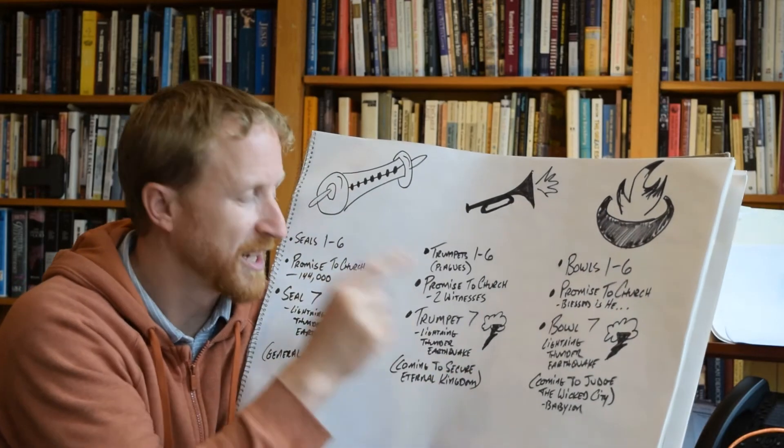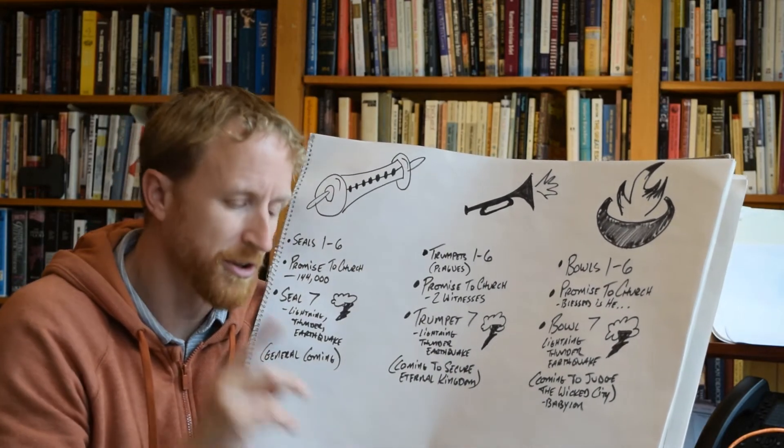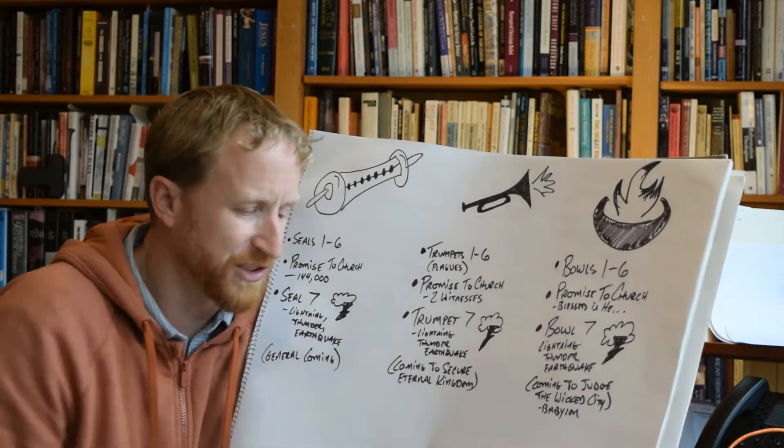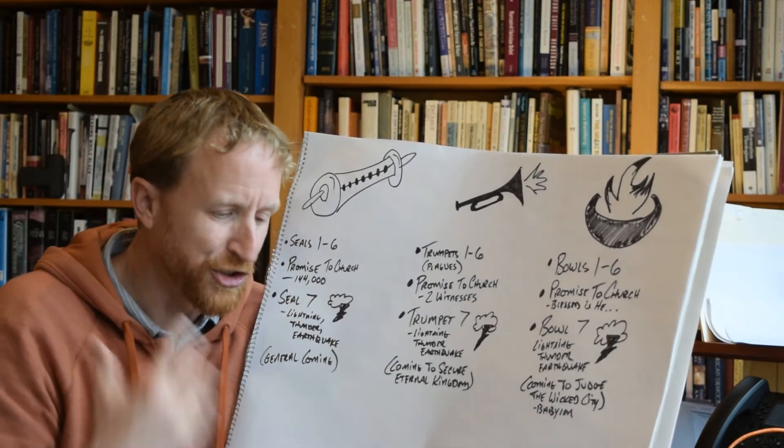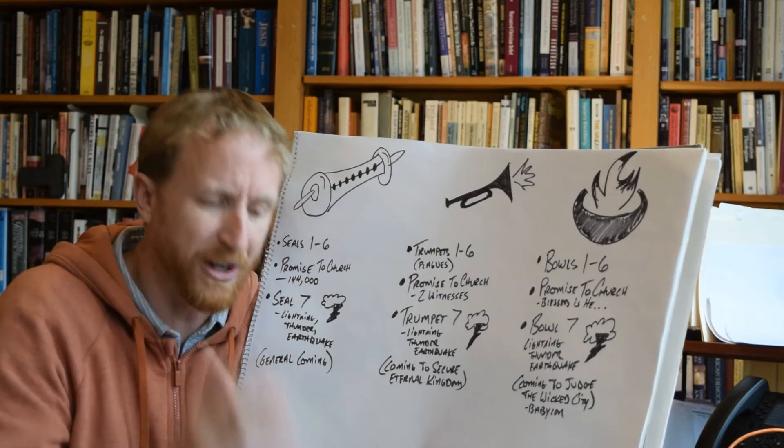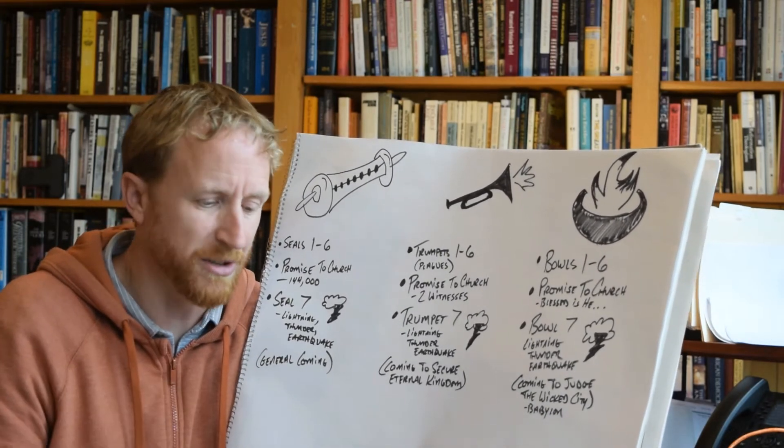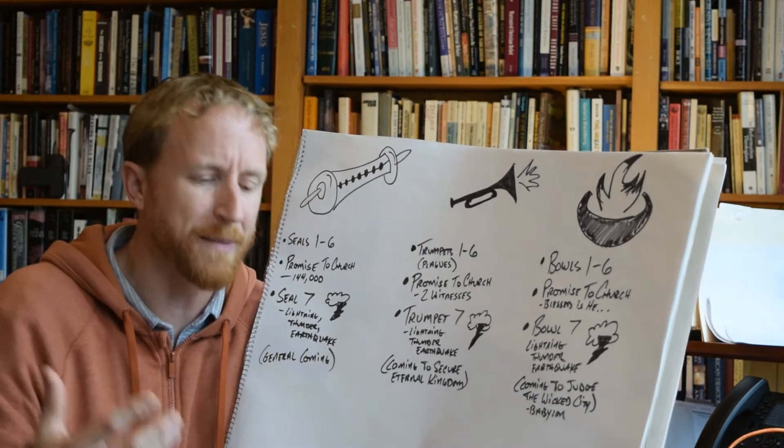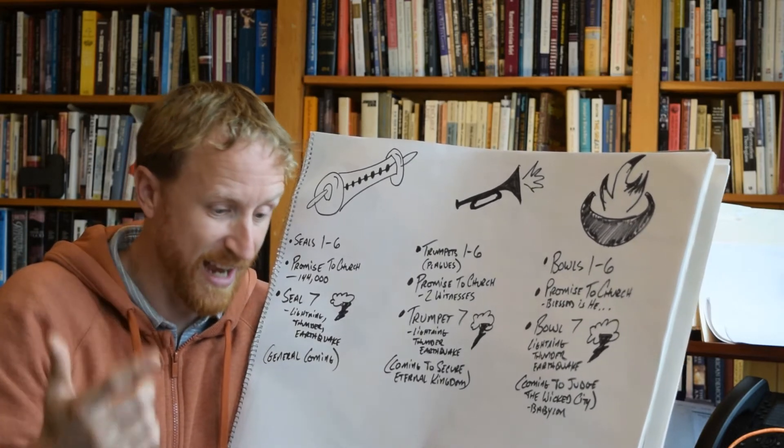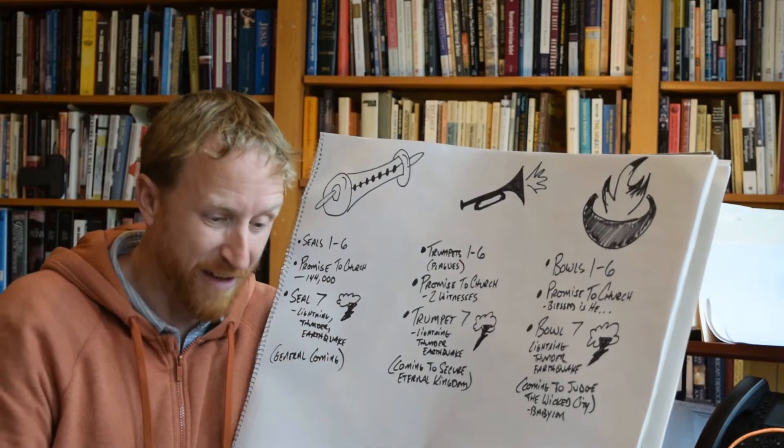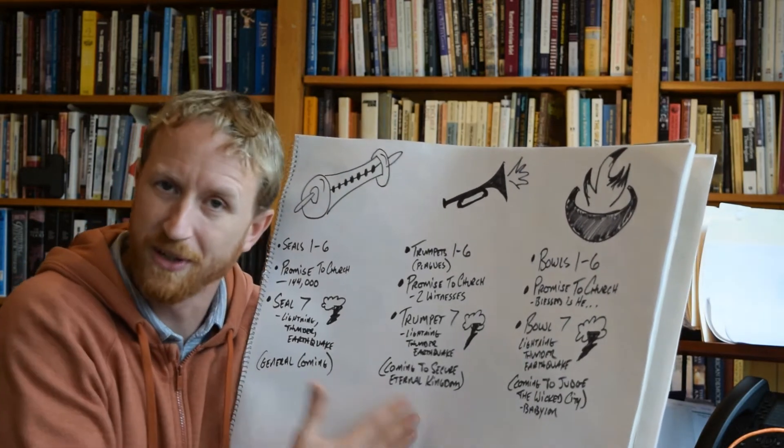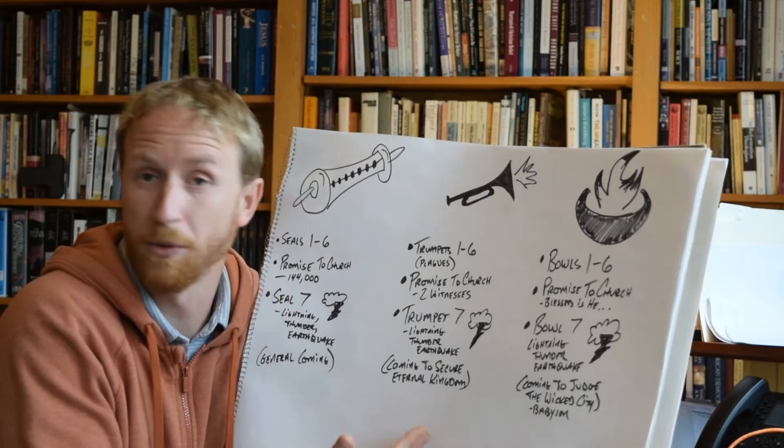But then, we circle back around, we get trumpet number seven, accompanied by lightning, thunder, earthquake. This is in chapter 11, these kind of climactic statements that after all this is done, all these voices from heaven shout out, finally, the kingdom of the world has become the kingdom of our Lord and of his Christ, and he shall reign forever and ever. We give thanks to you, this is verse 17, Lord God Almighty, who is and who was, for you have taken your great power and you've begun your reign. The nations raged, but your wrath came, and the time to judge the dead, the time for rewarding the servants, the prophets, the saints, and those who fear your name, the time for destroying all those who destroy the earth, has come. Certainly sounds kind of climactic, or like we're arriving at the end of history.